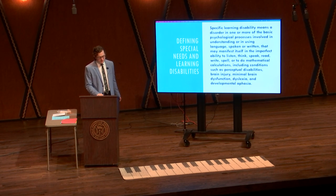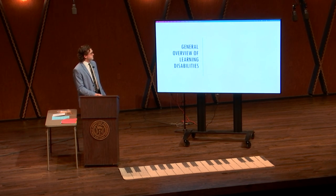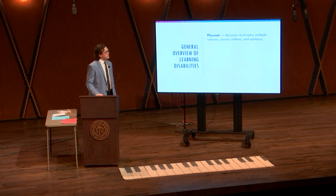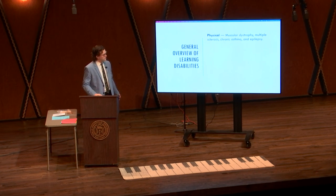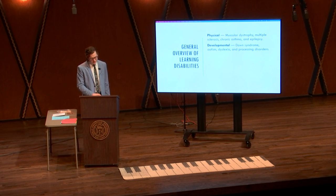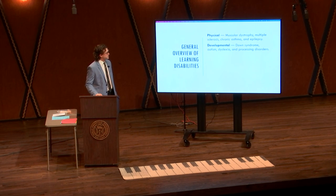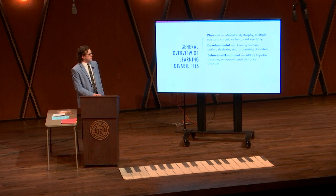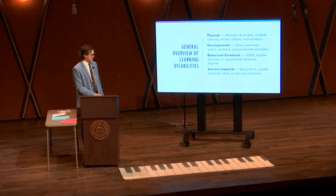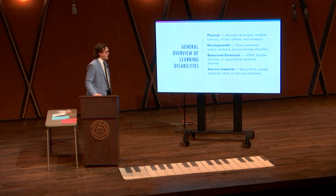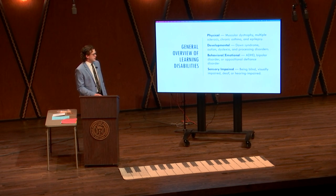We will begin with discussing a summary of learning disabilities. They are physical, including muscular dystrophy, multiple sclerosis, chronic asthma, and epilepsy. Developmental, such as Down syndrome, autism, dyslexia, and processing disorders. Behavioral and emotional, such as ADHD, bipolar disorder, or oppositional defiance disorder. And sensory impairment, which is being blind, visually impaired, deaf, or hearing impaired.